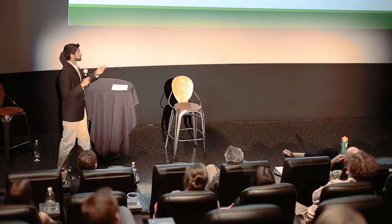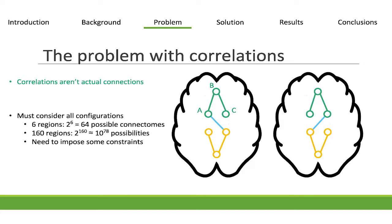Now, this might seem pretty simple given this example. This example shows six different nodes in the brain. And then there's only two to the six possible connectomes. You could have each edge missing or absent. That's only 64 possibilities. But as soon as we scale it up to a reasonable number, like 160, we get way too many possibilities.